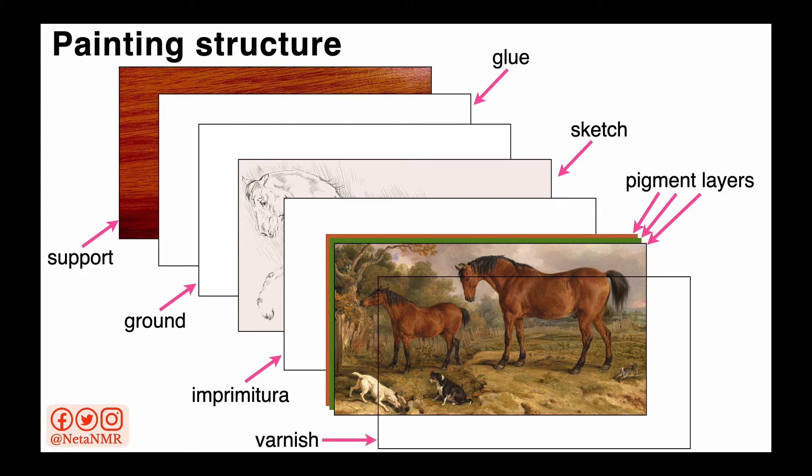Finally, a layer of varnish is applied on top of the painting. The varnish has different purposes — it can be used as a protective layer, shielding the paint layers from dirt and dust. Additionally, a glossy varnish is also helpful in enhancing the colours of the painting.